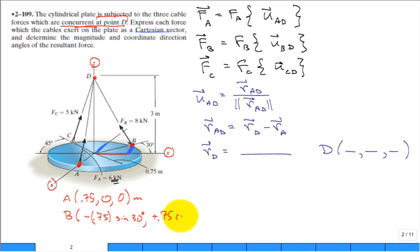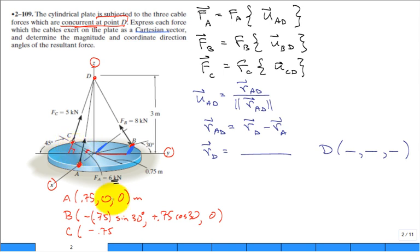For point C, the x-component will be negative 0.75 times the sine of 45 degrees. Note that since it's 45 degrees, sine and cosine are equal, so you can't mix them up here. Looking at the right triangle with the 45-degree angle: x is negative 0.75 sine of 45 degrees, y is negative 0.75 cosine of 45 degrees, and z is zero.